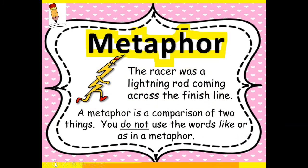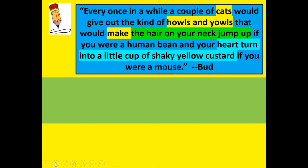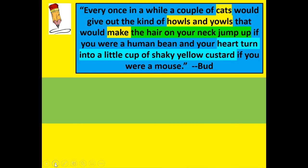And here's the word metaphor — write down metaphor. A metaphor is a comparison of two things; you do not use the words like or as in a metaphor. For example: the racer was a lightning rod coming across the finish line. So here's our quote: every once in a while, a couple of cats would give out the kind of howls and yowls that would make the hair on your neck jump up if you were a human being, and your heart turned into a little cup of shaky yellow custard if you were a mouse.